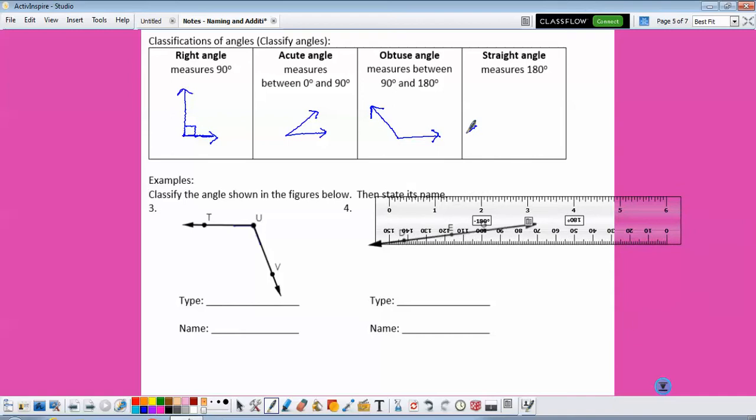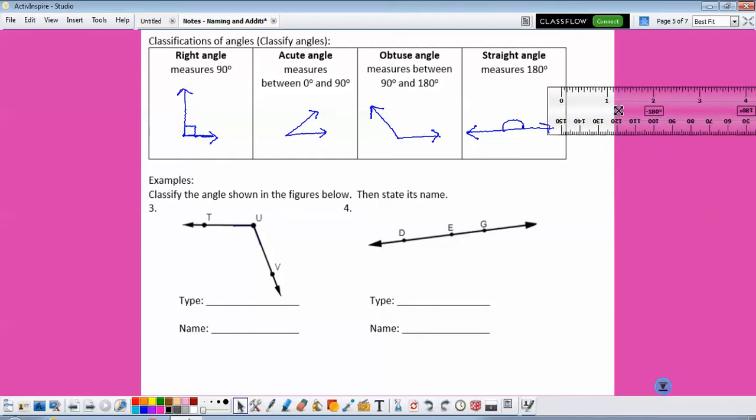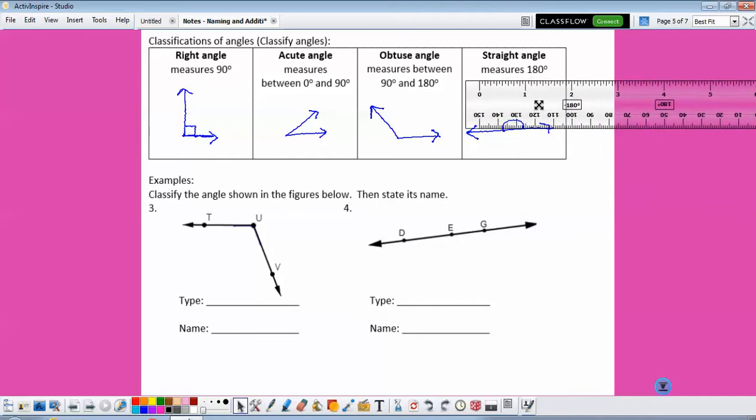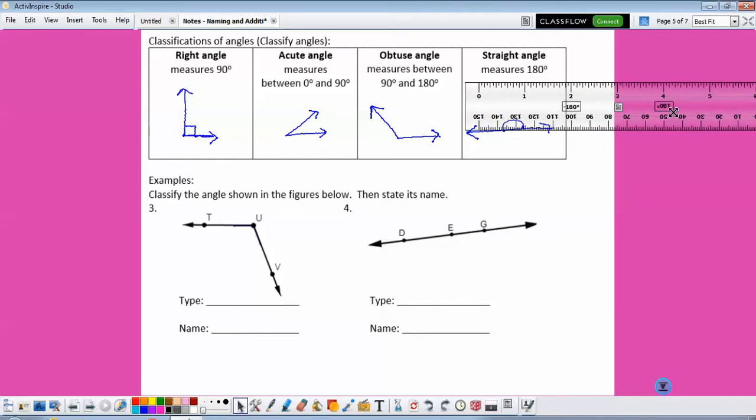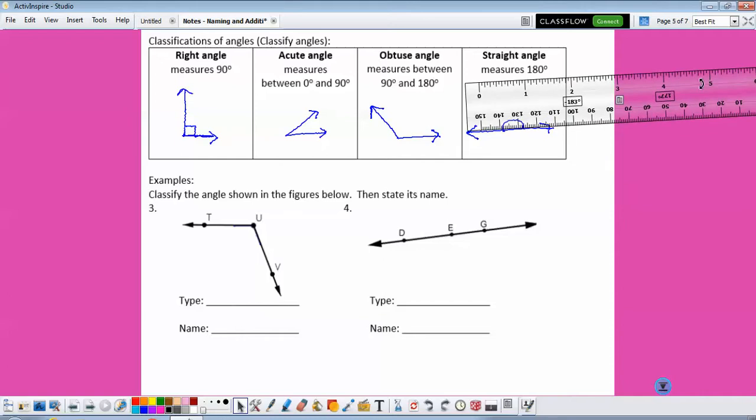And then a straight angle basically just looks like a line, it's open all the way, and it measures 180 degrees. And I can see that it lines up. If I was a better artist. There we go. It lines up with the side of the ruler, so we know it's 180 degrees.